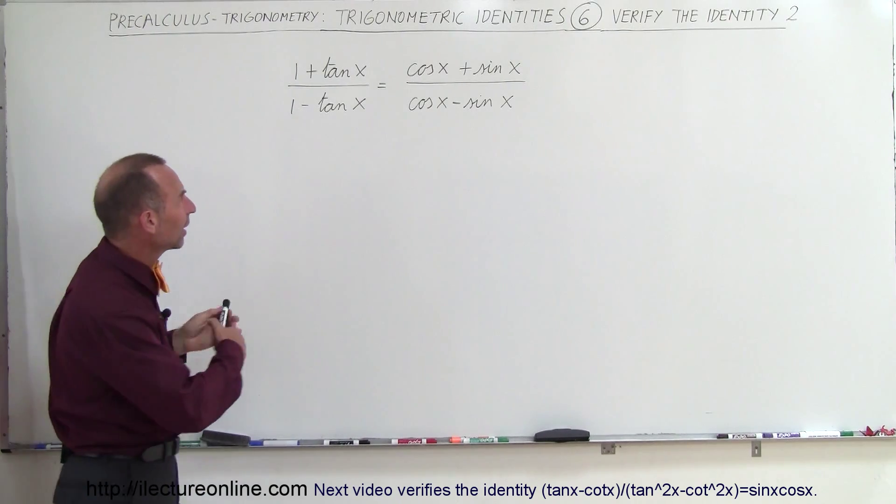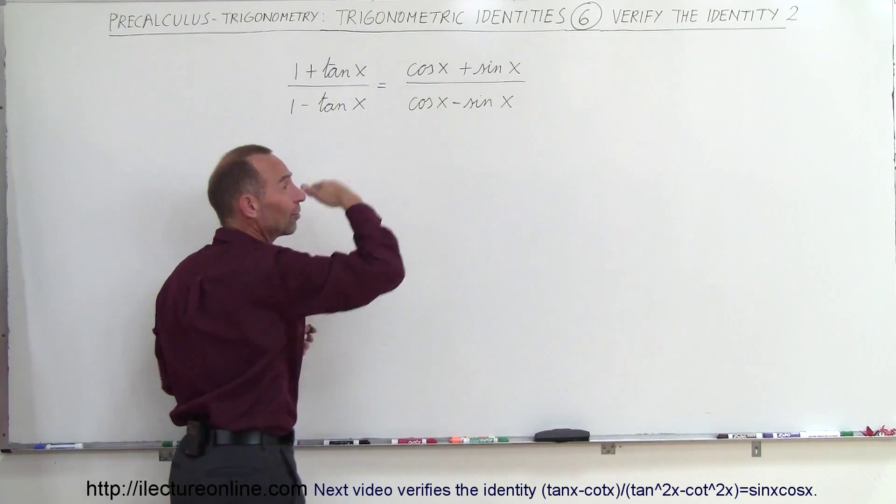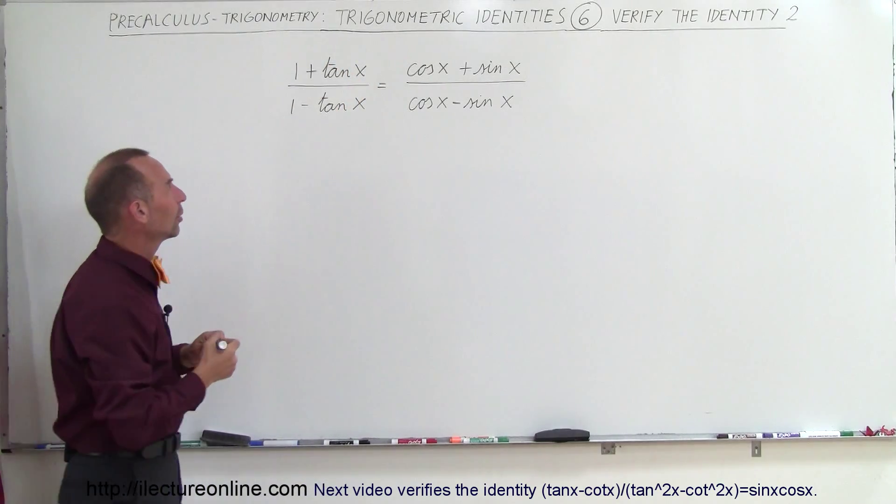So usually you realize that since I have to end up with sines and cosines here, I'll take the tangent and convert that to sines and cosines and then we'll probably get close to it.